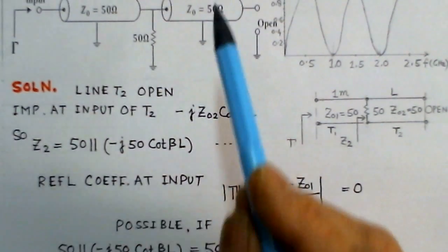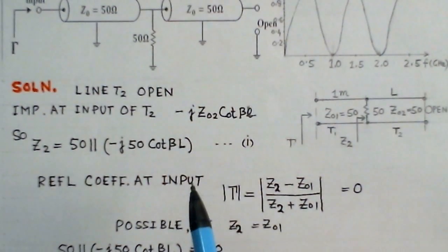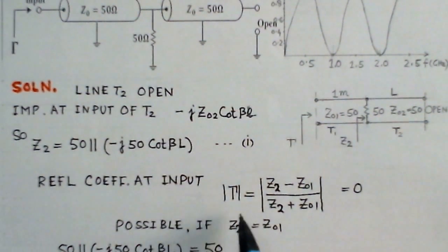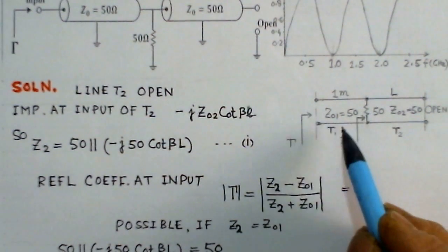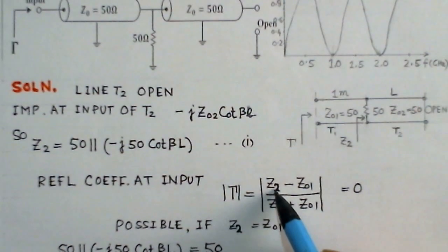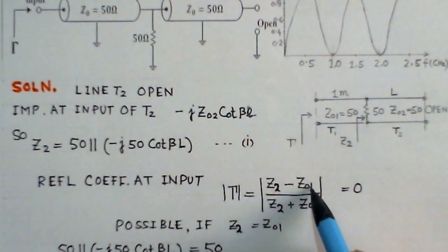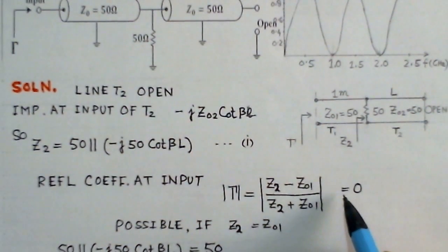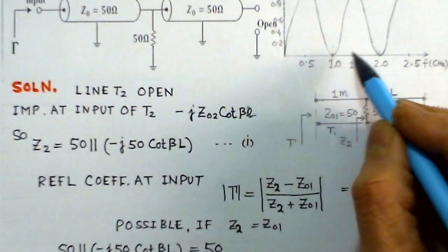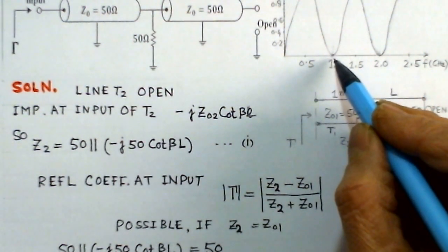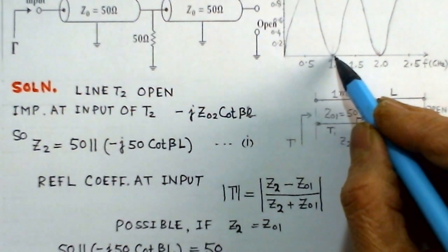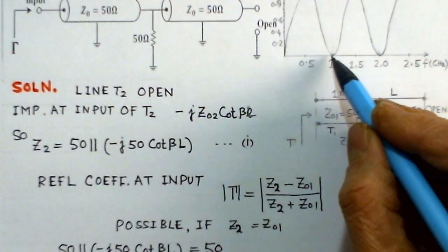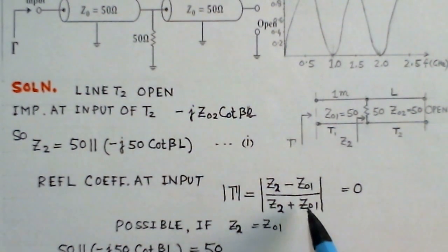Since the input reflection coefficient as a function of frequency plot is given, we find the relation for the reflection coefficient. The magnitude of the reflection coefficient for this length of line is given by |Γ| = |Z2 - Z01| / |Z2 + Z01|, where Z2 is the load. It is observed from the plot that the reflection coefficient is 0 at 1 GHz, 2 GHz, and so on. We take the case when the reflection coefficient is 0, which is only possible when the numerator is 0, that is, Z2 equals Z01.